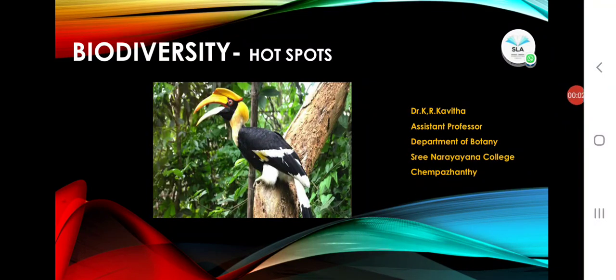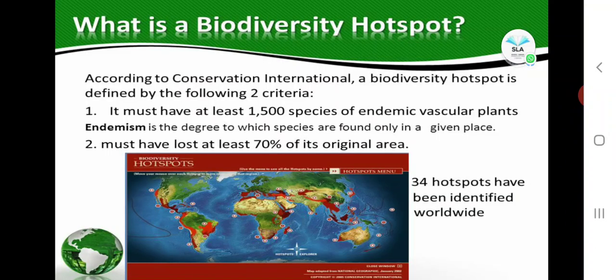Dear students, our next topic coming under biodiversity is hotspots. This is a major portion we have to study thoroughly because it is very important in the study of biodiversity. First we will discuss about what is a biodiversity hotspot. According to Conservation International, a biodiversity hotspot is defined by the following two criteria.